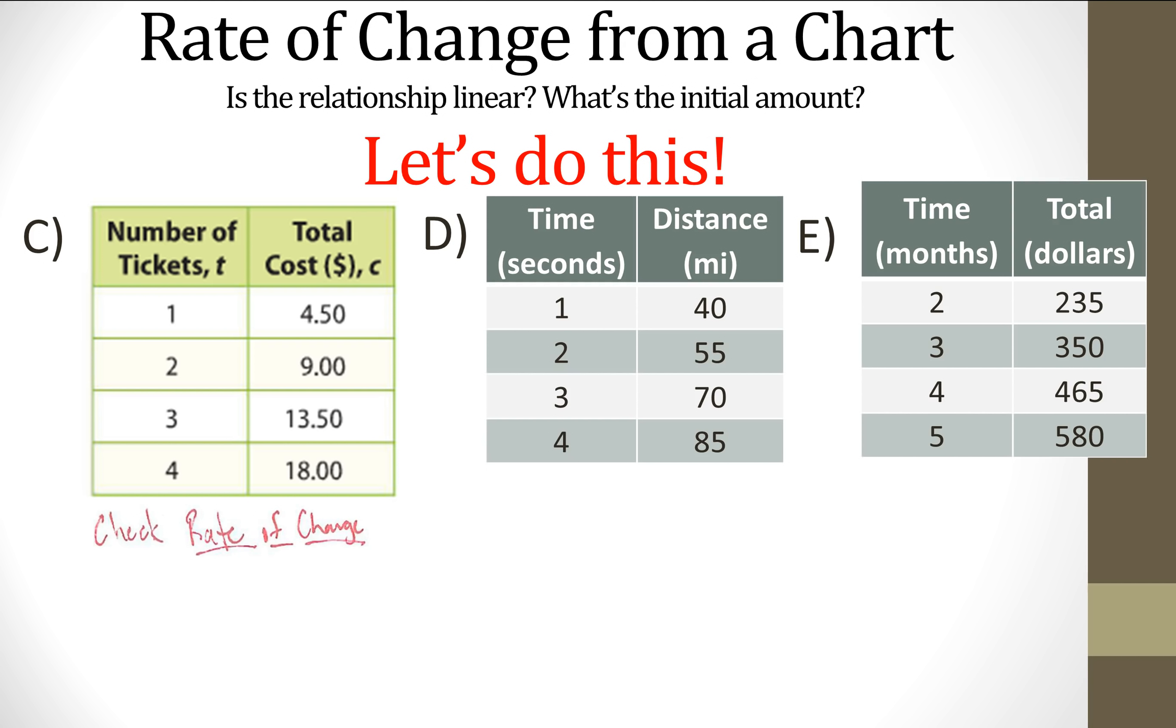We're back. So this does have a, I'm going to check the rate of change. It is 4.5. It's linear for C and the initial amount is zero. For D, I see that the rate of change is 15. And if I go back, the initial amount is 40 minus 15, which is 25.